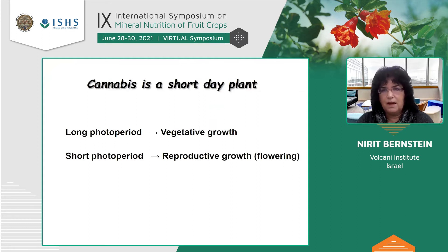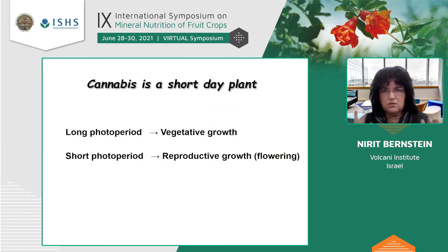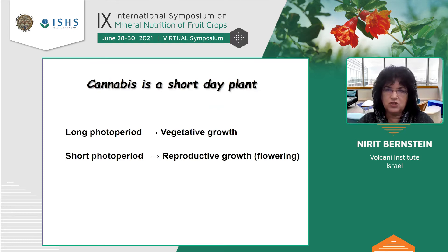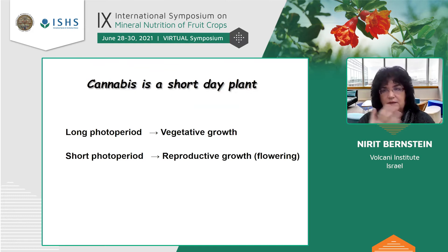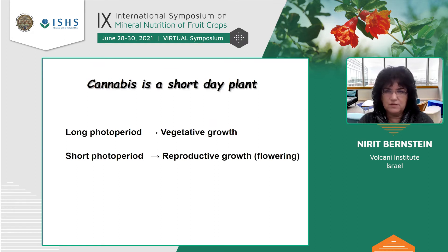So the first approach we took was: even though cannabis is a very ancient crop, I'm going to treat it as a new crop. What do we do with a new crop? Usually we start with NPK — phosphorus, nitrogen, and potassium — and we evaluate a range of concentrations and check for an effect. That was the first step.